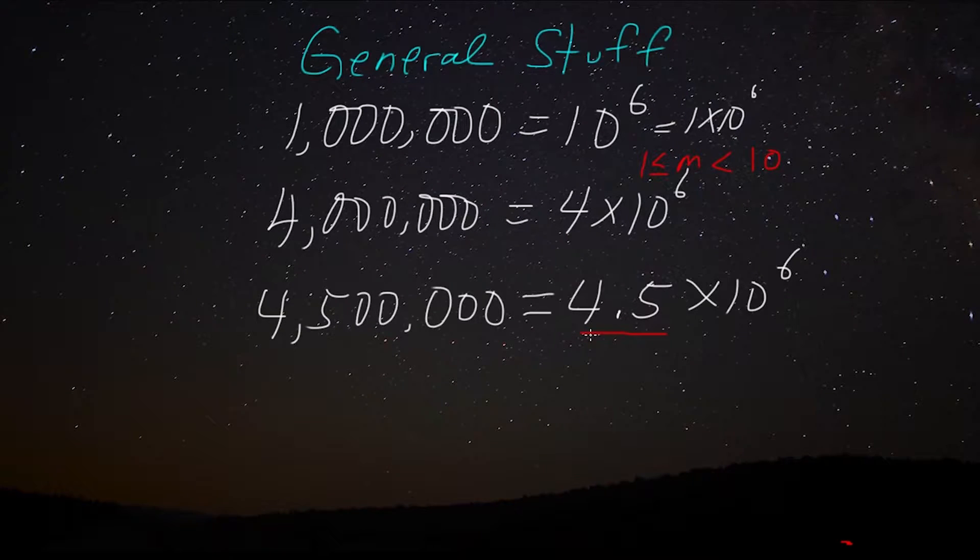And if you're having trouble with this idea of why we're using a decimal point, just think of it this way. We can say this number in English as 4,500,000. Or we could say 4.5 million. And they mean exactly the same thing. That's where this 4.5 fits into the picture.